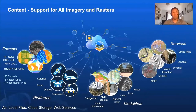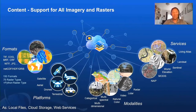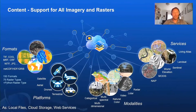Starting with content, ArcGIS supports all forms of imagery and rasters, including different formats and imagery from different sensors — satellite, aerial, drones, and terrestrial. We support multiple modalities including orthophotos, categorical data, elevation data, LiDAR, radar, and multi-dimensional data. Imagery can come in different forms — local files, cloud storage, or web services such as those in the Living Atlas, including datasets like Landsat, Sentinel, and World Elevation.